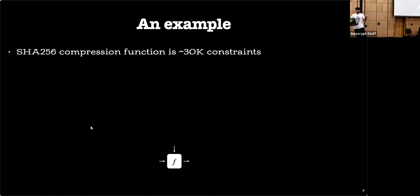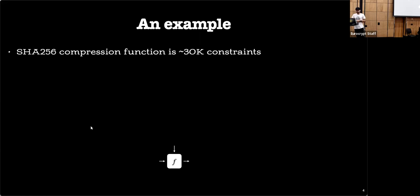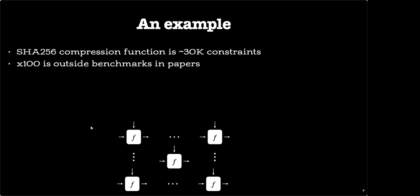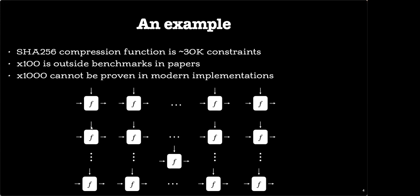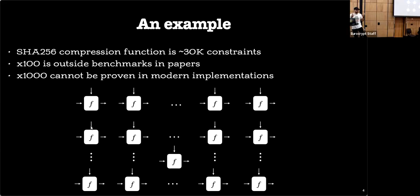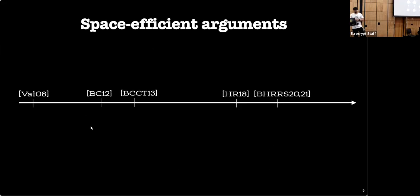For instance, if we consider the compression function of SHA-256, that's about 30,000 constraints. Put it in a Merkle tree or verify different transactions and you're already far outside benchmarks in papers. Multiply by a thousand for ZK rollups and you really don't have a proof system that can deal with circuits of that scale in the real world.